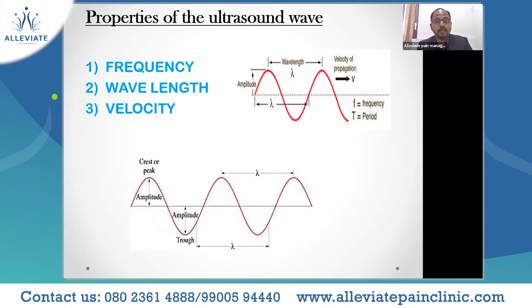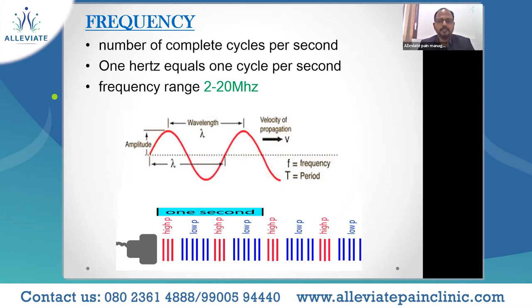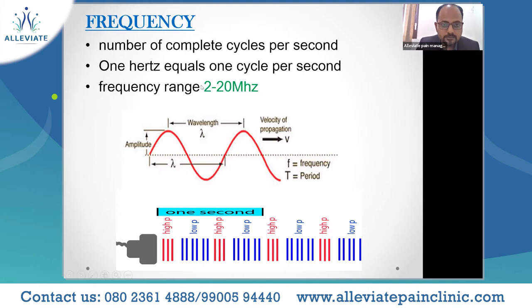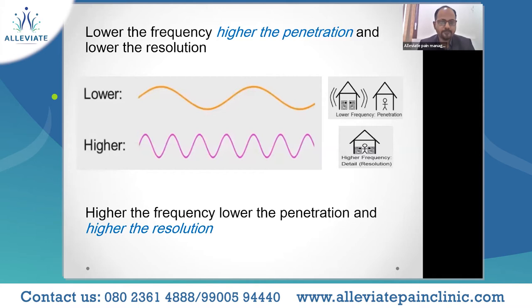Coming to the core properties of an ultrasound wave: frequency, wavelength, and velocity. Frequency is the number of complete cycles per second — one hertz equals one cycle per second. The frequency range commonly used in our transducers can be from 2 to 20 megahertz. The transducers are in these varied frequency ranges, and let's see how they differ and are applicable in our clinical setting.